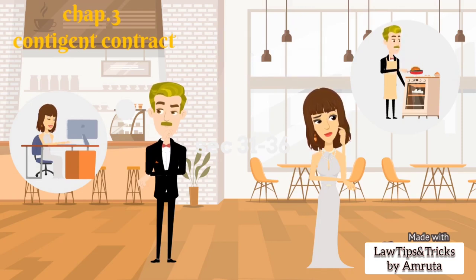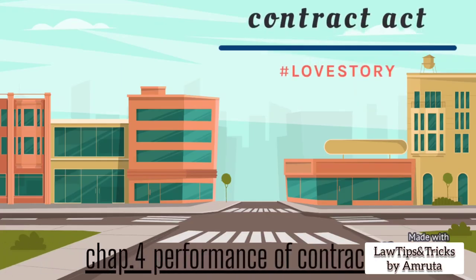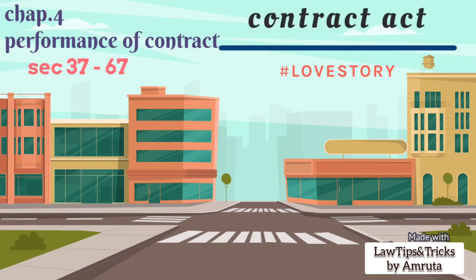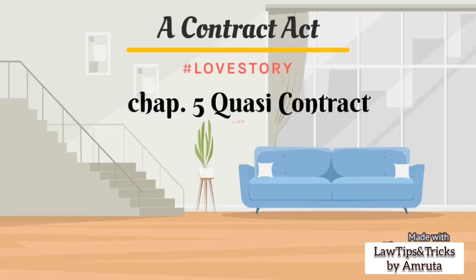Now Chapter 4: Performance of Contract, from section 37 to 67. So according to their conditions, they live their life. Everyone is under the obligation to perform his or her set of promises. Section 37 talks about this obligation. Sections 46 to 50 provide provisions regarding time and place for the performance of the contract. Like that, they live in a house and give time to each other. That was Performance of Contract.